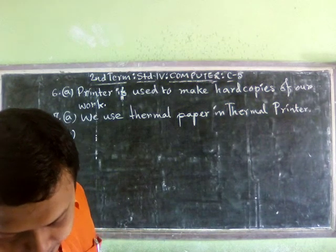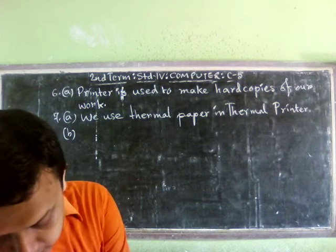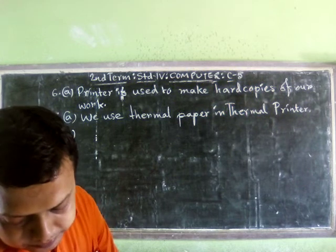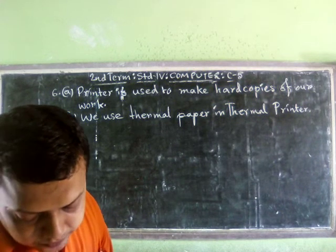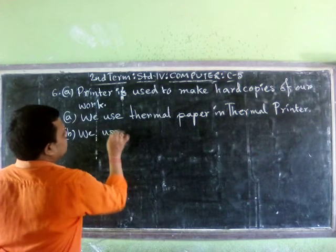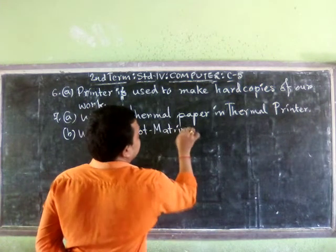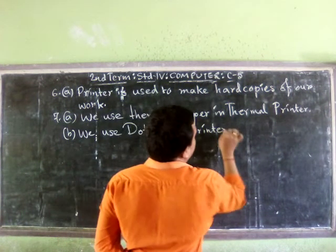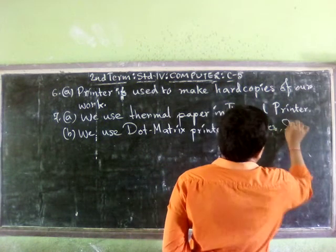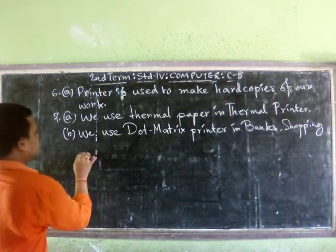Question B: at which place do we use a dot matrix printer? We use a dot matrix printer in places like banking or where continuous paper printing is needed.